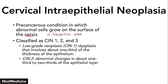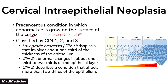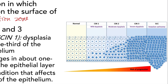CIN 2 usually involves two-thirds of the epithelium, and CIN 3 is a condition that has more than two-thirds involvement. There's a schematic here that helps explain what is going on. CIN 1, CIN 2, and CIN 3 are all dysplastic conditions, which means they are reversible. You can take the stress off, you can remove the epithelium, and you can essentially change the progression.